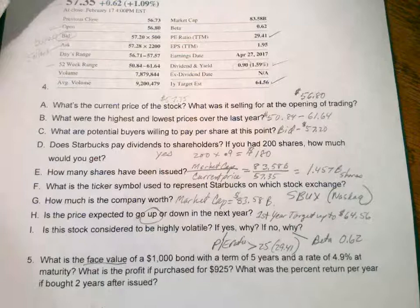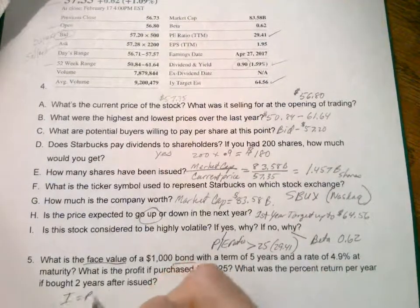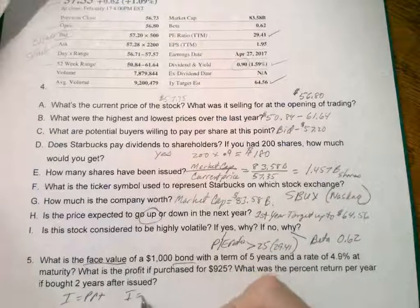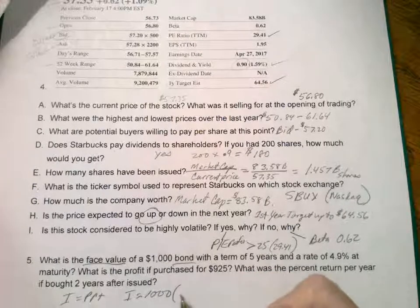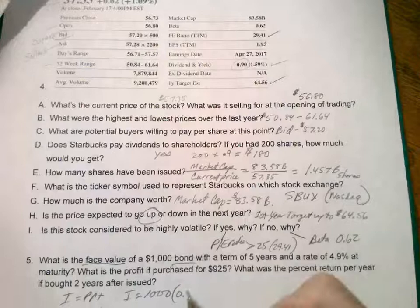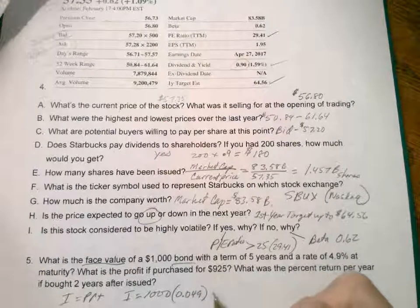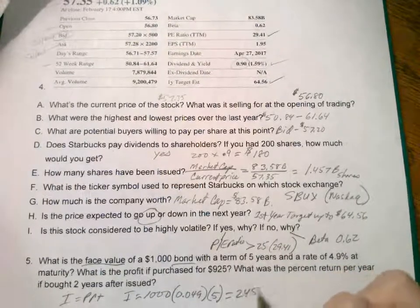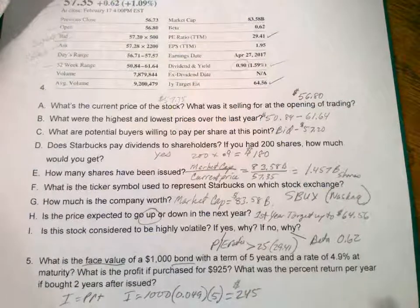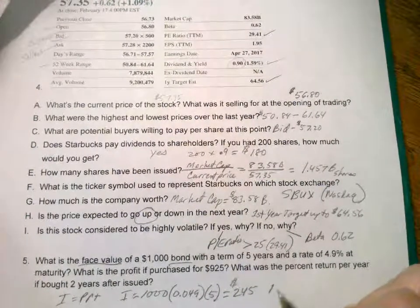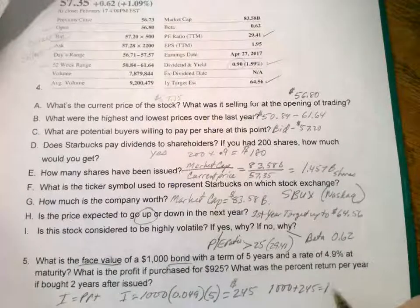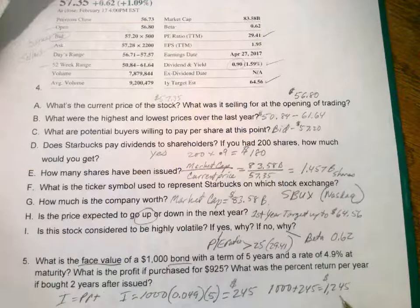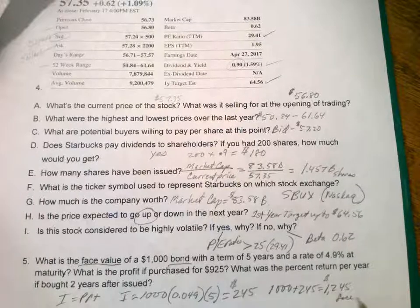Bonds are figured by simple interest: I = PRT. So the interest equals the principal of $1,000, at the rate of 4.9%, for five years. That gives $245 in interest, so $1,000 plus $245 is $1,245 paid at maturity — that's the face value.